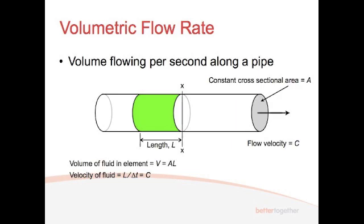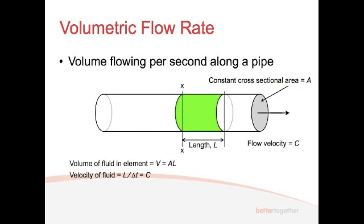The velocity of the fluid — we've got a boundary or marker at xx — and the velocity of the fluid we denote as C. If that fluid element moves the distance of L in relation to x, then the velocity is the distance L over the change in time. Velocity is distance divided by time. So that gives us C, which is our flow velocity.